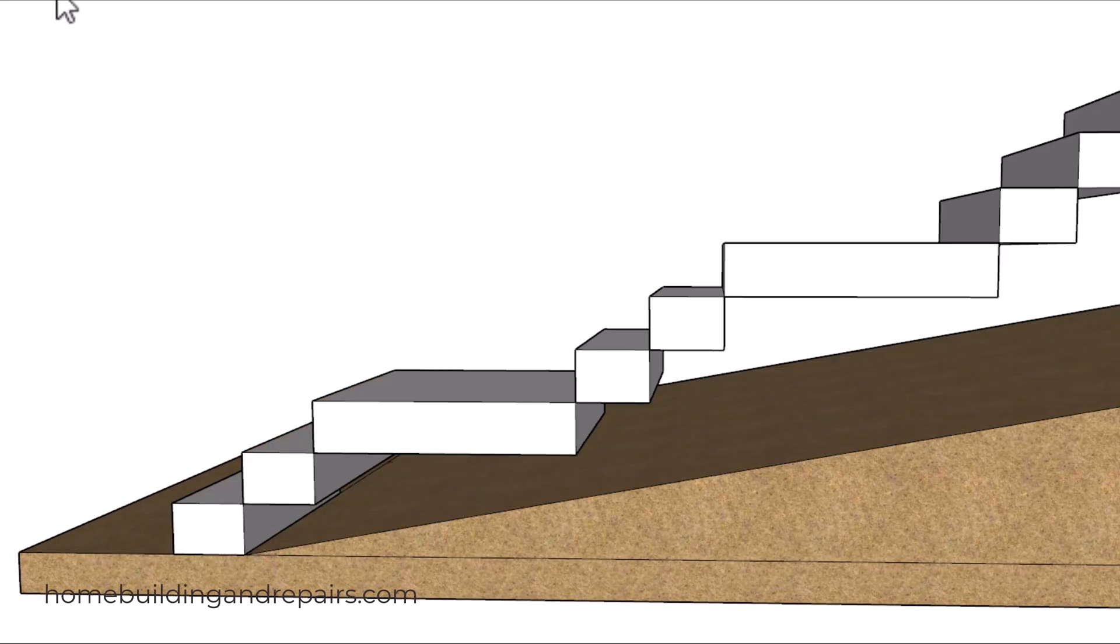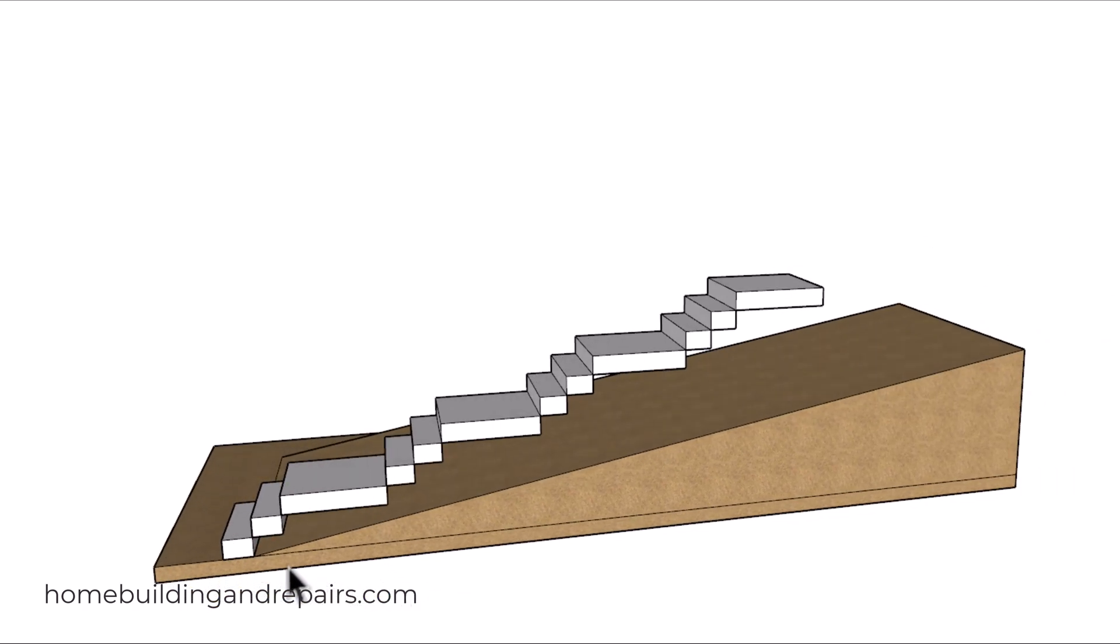But that's not going to be the case if we have something that's about 10 degrees, and that's what I have here. So I took the same riser height and tread depth and just put something together here. These landings are three foot by three foot.